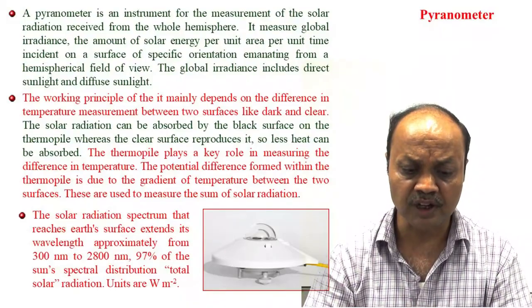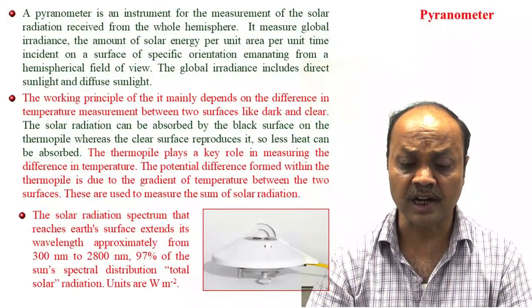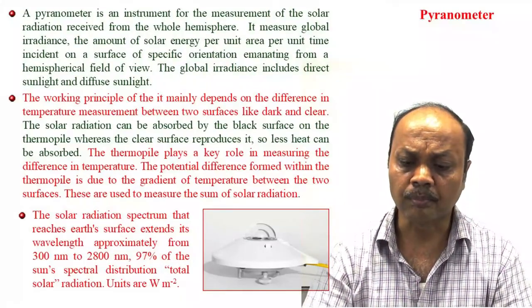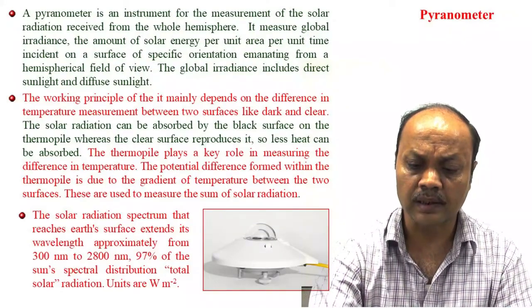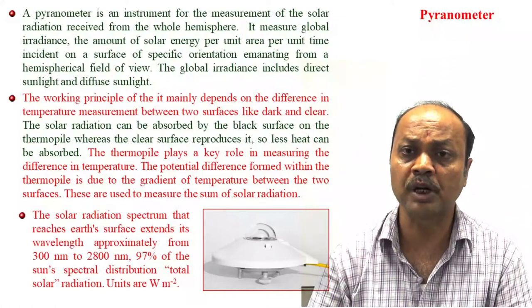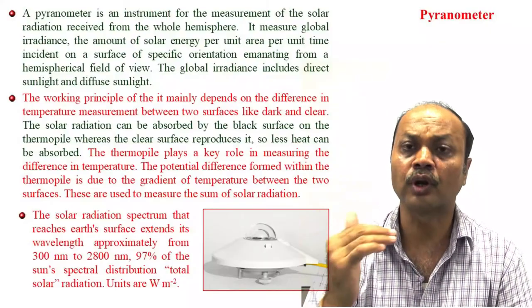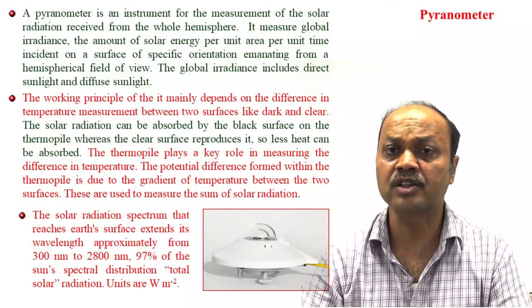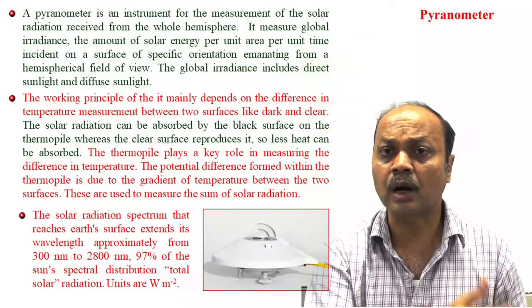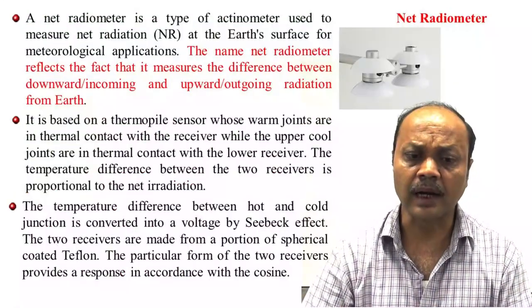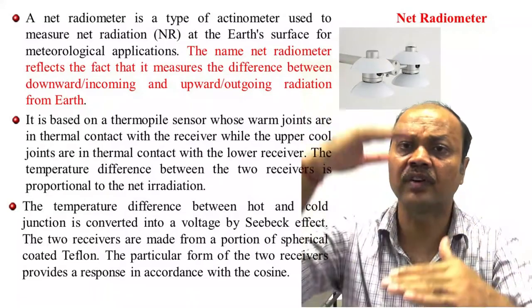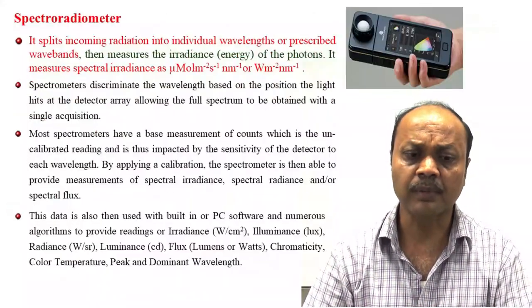A pyranometer measures total solar radiation. Sunlight has 97% of its spectrum between 300 to 2800 nm. It is measured in watts per square meter. Inside the pyranometer, there is a transparent part and a black part. The black part absorbs radiation and its temperature rises more than the transparent part. Based on this temperature difference, you can know the total solar radiation at any location — both outside and inside the greenhouse, which will differ.